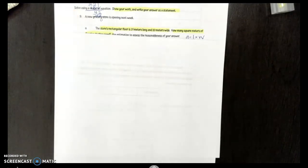Hey Aggies! Alright, so I am going to show you guys how to work out the remaining problems on your Mission 3 review. So let's take a look at number 9. Number 9 says a new grocery store is opening next week. Be sure you look at the top directions also. It does say solve using a model or equation, show your work, and write your answer as a statement. That's a key point right there. You want to be sure to write your answer as a statement.